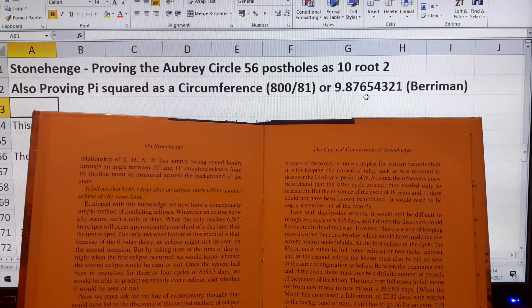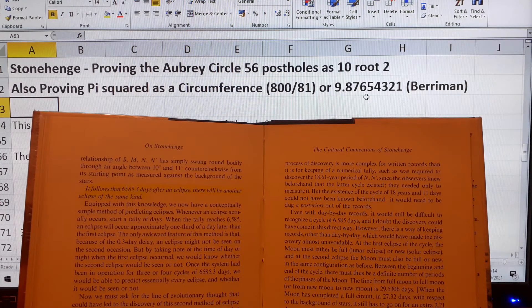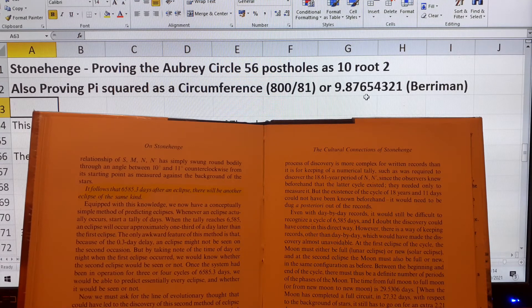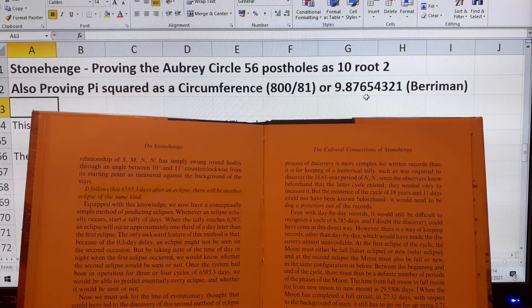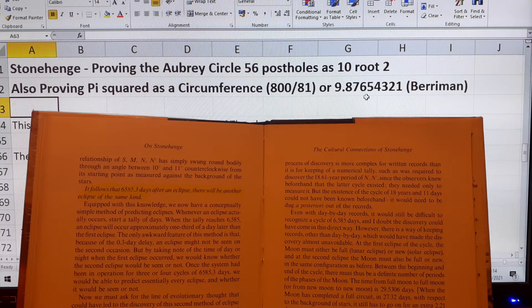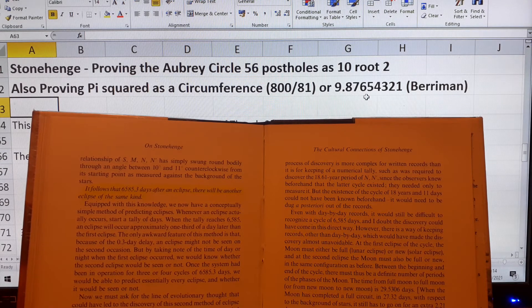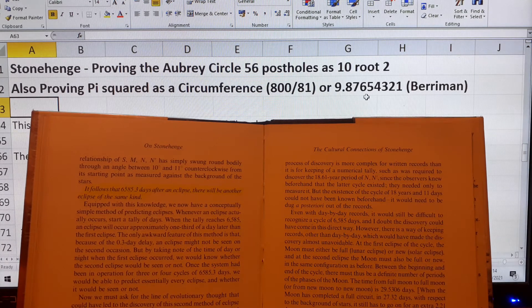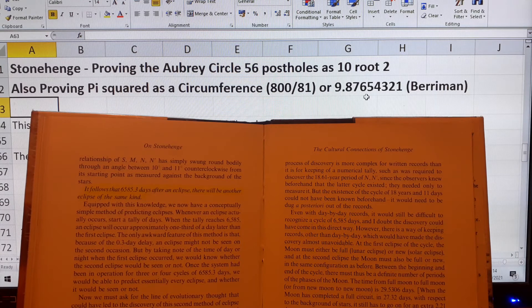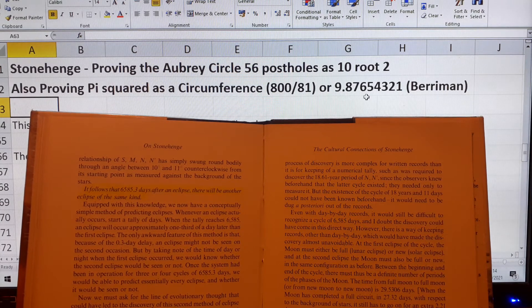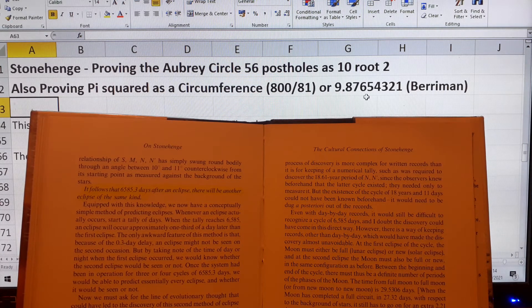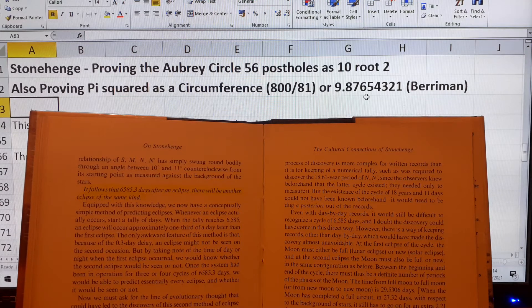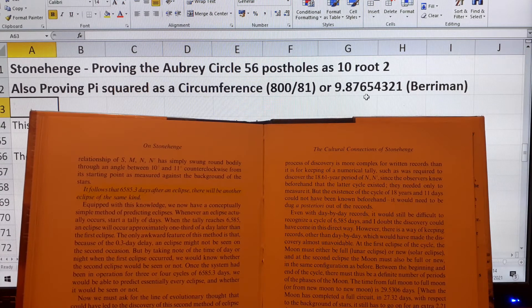They really smoothed it out and made it very simple. If we divide 5280 by 360, we get this eclipse unit of 14.666. This unit is hidden, and they're all hidden, these units. You have to dig them out. We're going to look at root 2 now, which is hidden in the perimeter of the Aubrey Circle, using this number 56. We can find it very easily.